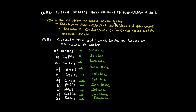One method involves the reaction of two different salts — for example, a double displacement reaction using silver and sodium chloride. Another method uses the reaction of a carbonate or bicarbonate with a dilute acid, producing a salt from the dilute acid reaction.